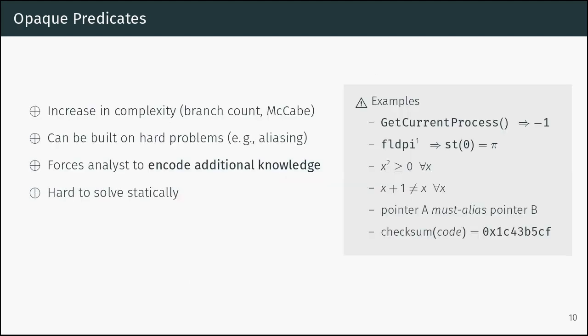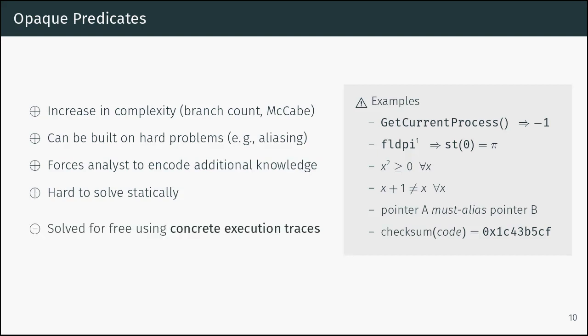In general, opaque predicates increase the complexity of analysis. They can be built on hard problems such as pointer arithmetic, checksumming, and equations. They force the analysis to encode additional knowledge — for instance, how to handle API calls or reasoning rules about inequalities. They are hard to solve statically. However, if we have an execution trace — we run the program and observe executed instructions — we basically solve them for free, because we see where the program goes.